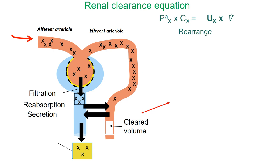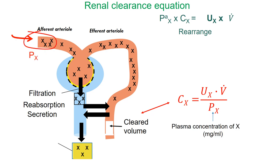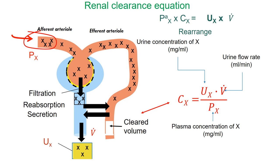We can take the simplified definition of renal clearance and rearrange the equation to get: CX equals the ratio of UX times V-dot over PX. The beauty of this equation is that you simply need a measure of the arterial blood and a sample of the urine to measure the concentration of X. You need only three numbers: the plasma concentration of X, the urine concentration of X, and the urine flow rate. Typically, you collect urine over a period of 24 hours, measure the concentration of substance X in the urine, and use that in your equation.